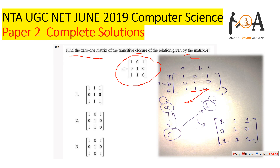For row a: a to a is reachable (1); a to b is reachable via path a→c→b, so it is 1; a to c is direct, so it is 1. For row b: b to a — there is no path from b to a, so it is 0; b to b — you are already at b so it is 1; b to c — there is no direct path in this directed graph, so it is 0.